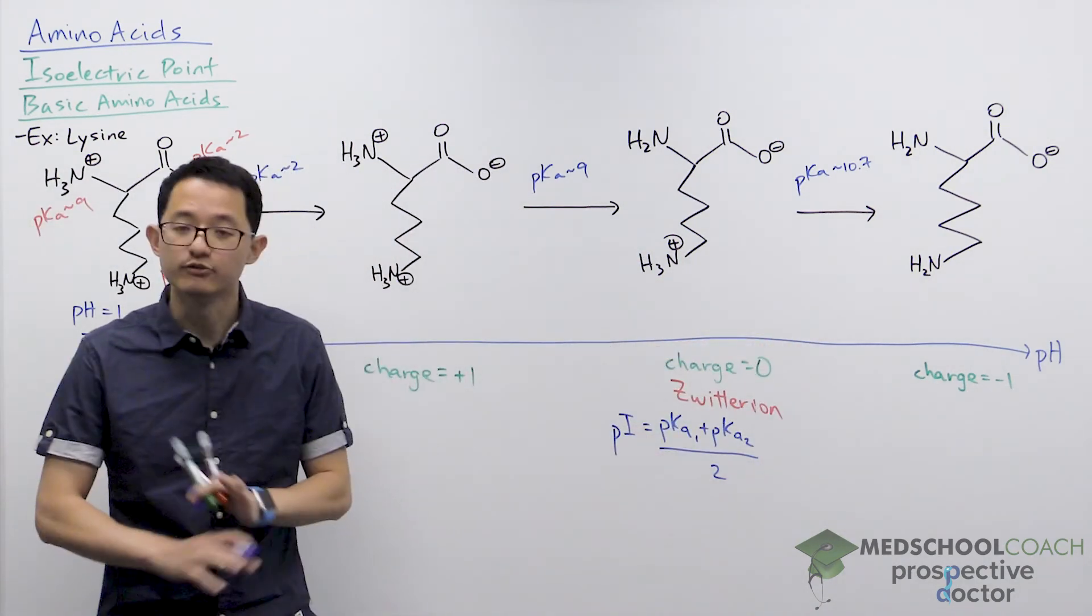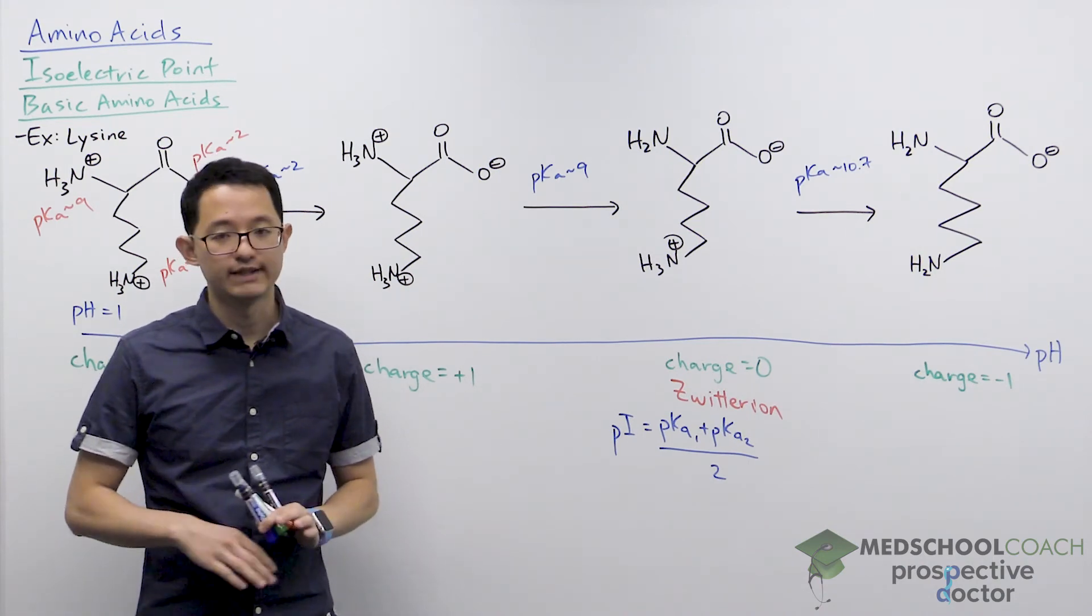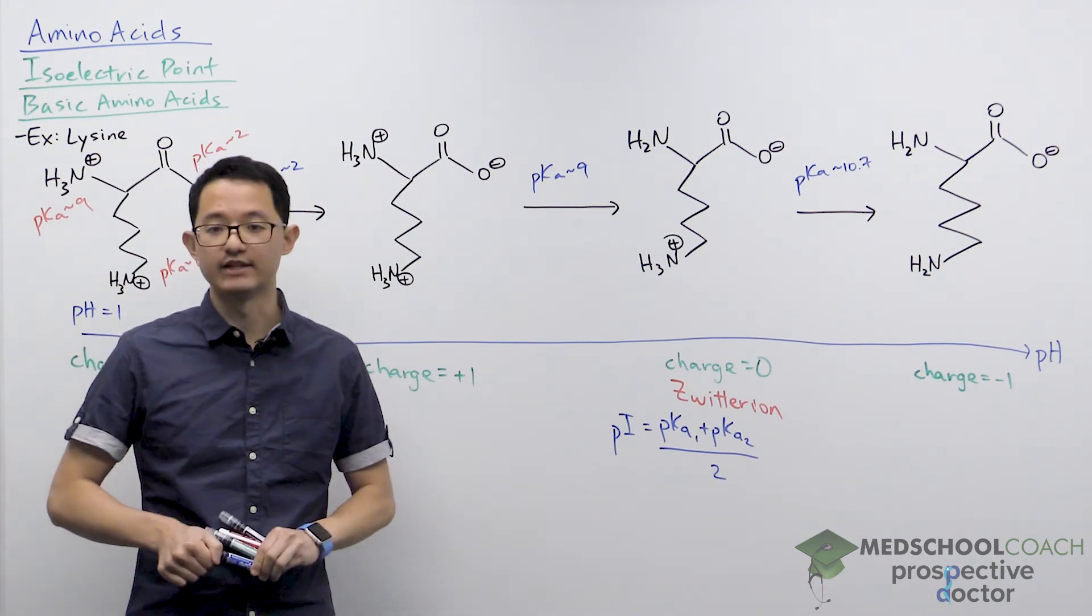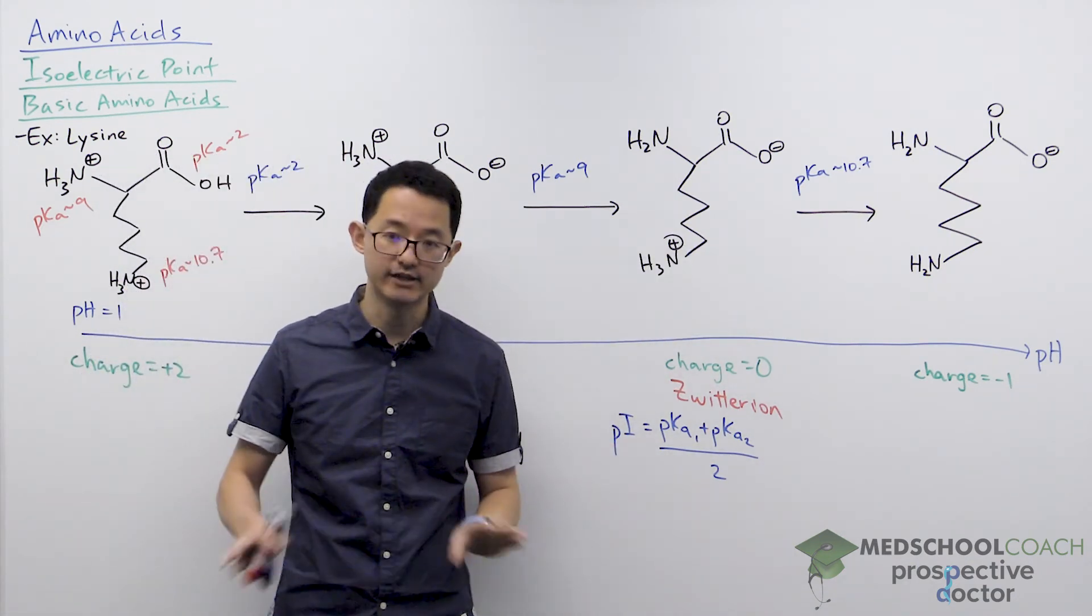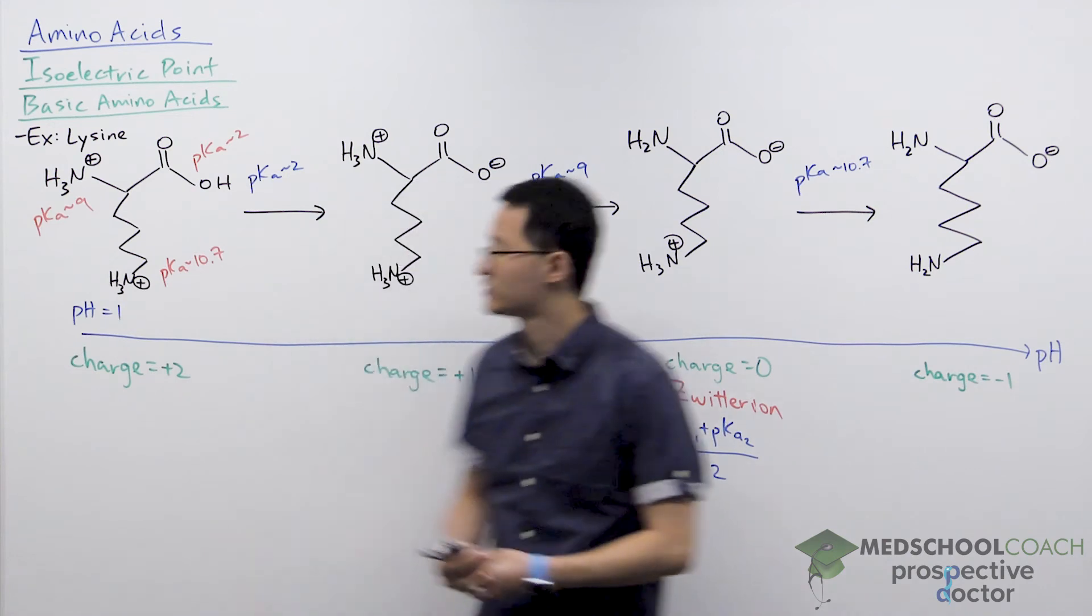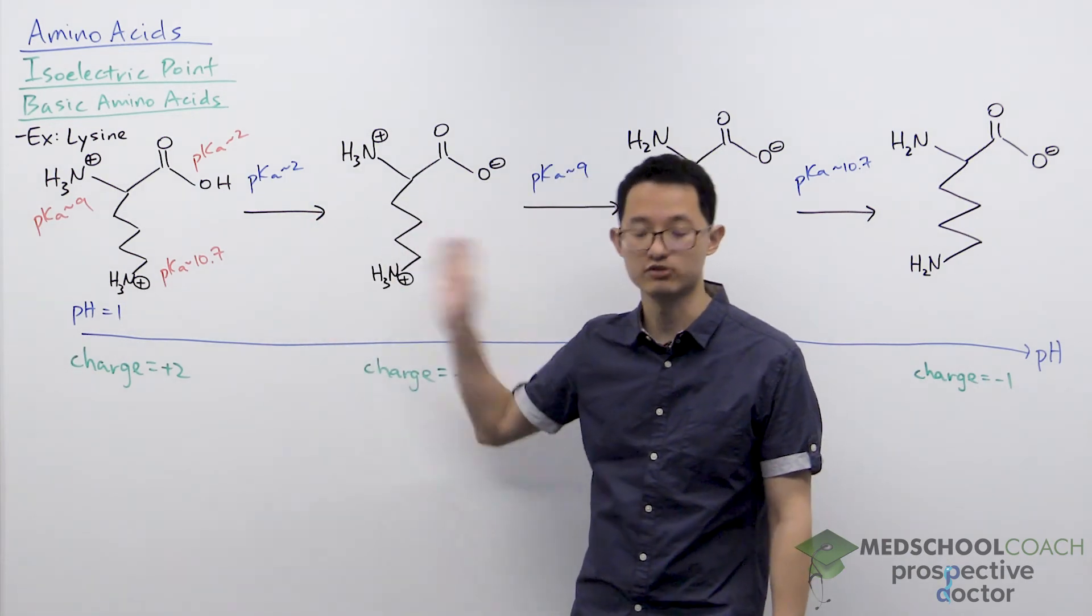There are a couple things that you do not want to do. First, you do not want to take the average of all three pKa's - you're not just going to add all three values and divide by 3. That is incorrect. You also don't want to just arbitrarily select the first two pKa values. That's also incorrect.